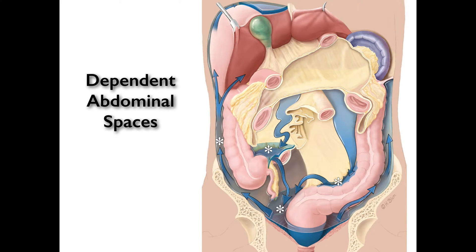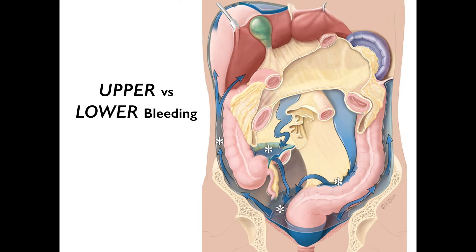First we'll go over the abdomen. There are multiple dependent spaces. Depending on whether you have upper versus lower source of bleeding, fluid will accumulate in different areas. With a lower GI bleed, you might not see fluid in Morrison's pouch until later, whereas with a liver laceration you might see fluid in Morrison's pouch first.